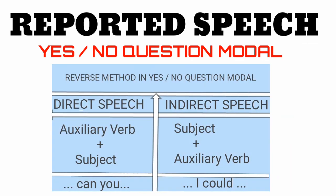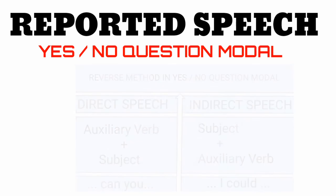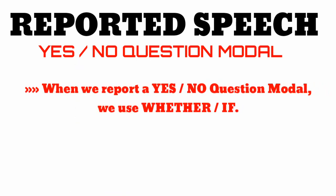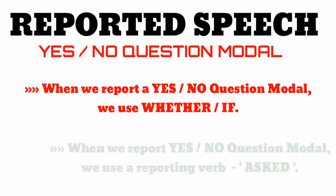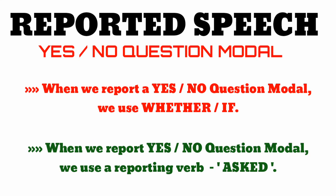Note 1: The reverse method is used in reporting yes or no question model — in direct speech, the order is auxiliary verb + subject (e.g., 'can you'), while in indirect speech it becomes subject + auxiliary verb (e.g., 'I could'). Note 2: When we report a yes or no question model, we use 'whether' or 'if'. Note 3: When we report a yes or no question model, we use the reporting verb 'asked'.